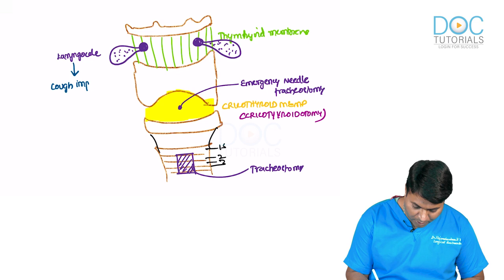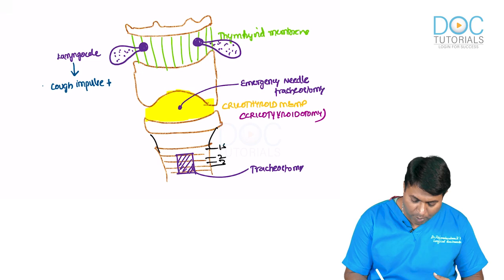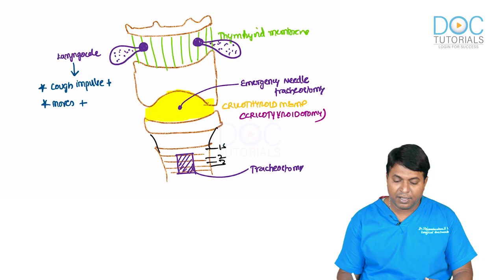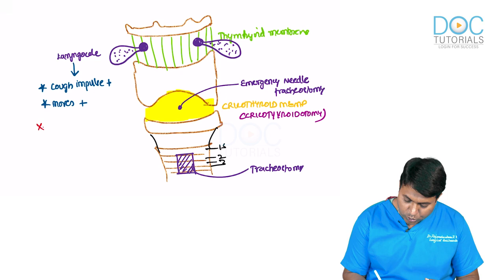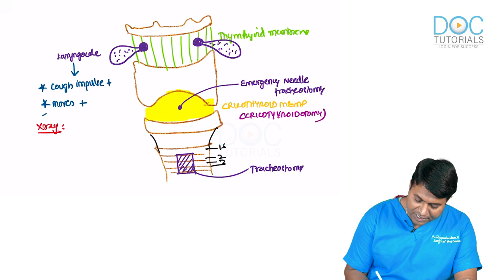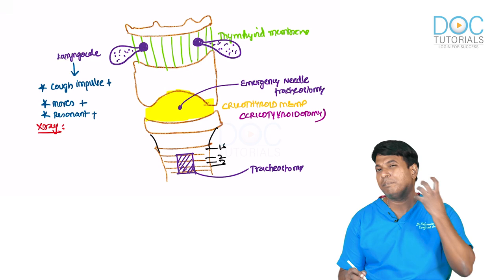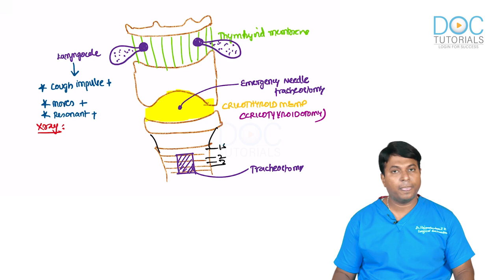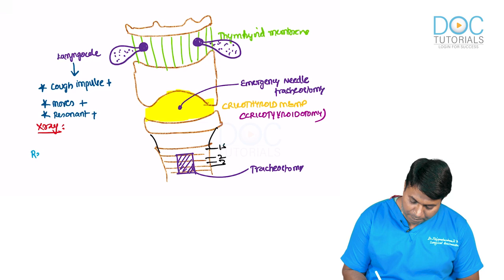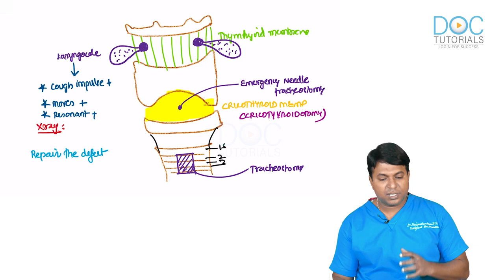Clinical features of laryngocele: cough impulse is positive — the swelling becomes more prominent on coughing. It moves with deglutition. On X-ray, the air-filled swelling is visible. It is resonant on percussion because it is air-filled. Treatment is repair of the defect in the thyrohyoid membrane.